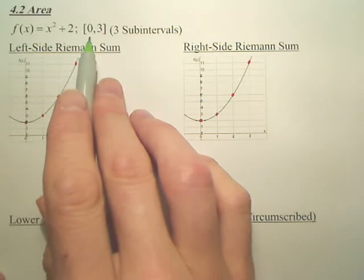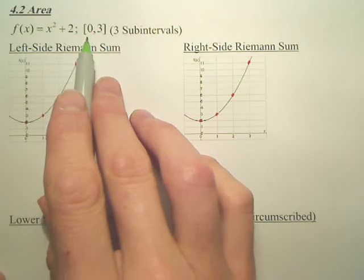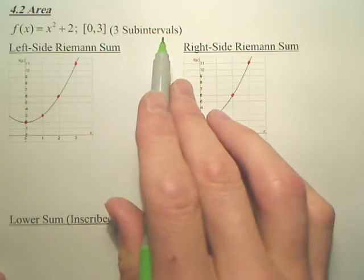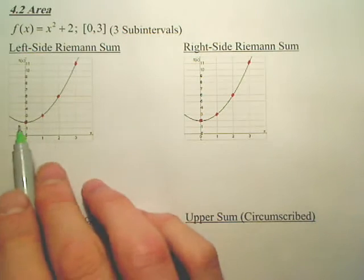All right, the equation x squared plus 2, the closed interval 0 to 3, and we're going to make three rectangles, three subintervals to approximate the area under this curve.